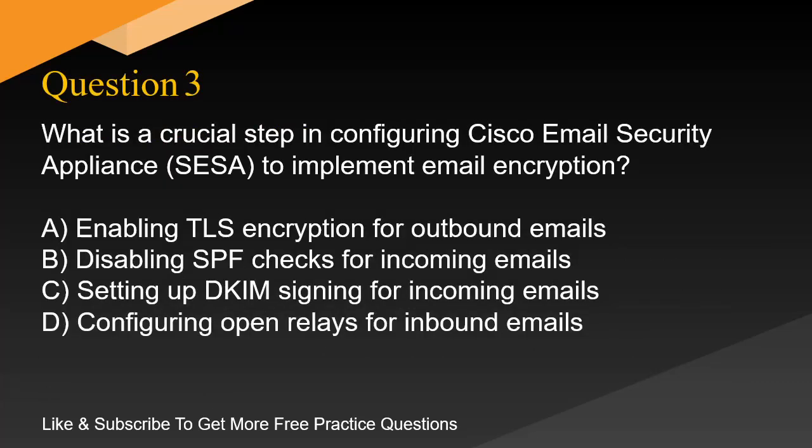Question 3. What is a crucial step in configuring Cisco Email Security Appliance (SESA) to implement email encryption? A. Enabling TLS encryption for outbound emails. B. Disabling SPF checks for incoming emails. C. Setting up DKIM signing for incoming emails. D. Configuring open relays for inbound emails.